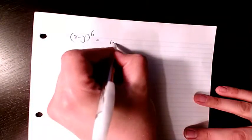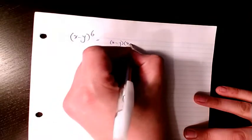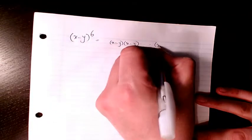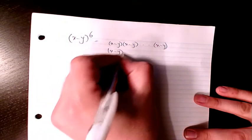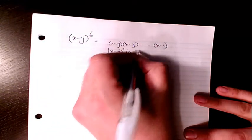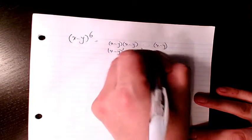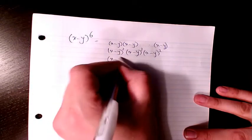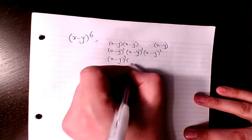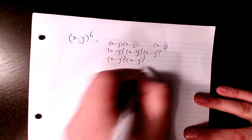In this video, I want to show how to expand x minus y to the power of 6. We have different options. One option is to multiply x minus y 6 times and then simplify it. Or have x minus y squared times x minus y squared times x minus y squared. Or we can have x minus y cubed times x minus y cubed. I choose this one.